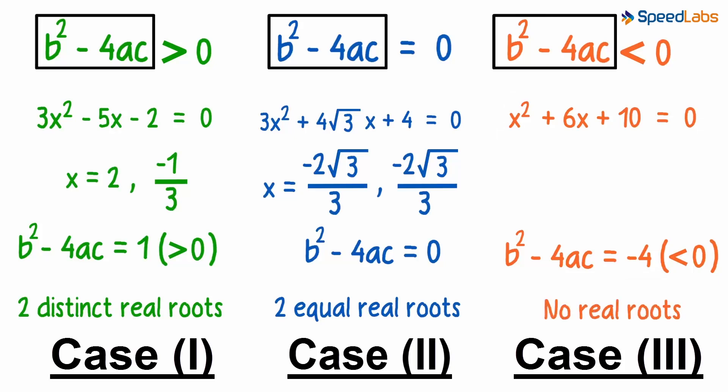The expression b squared minus 4ac is given a special name. It's called the discriminant of the quadratic equation. It is the discriminant that decides if the quadratic equation has real roots or not.